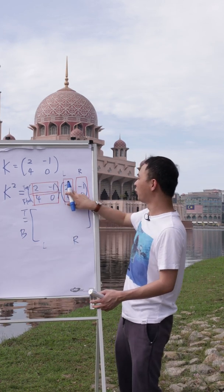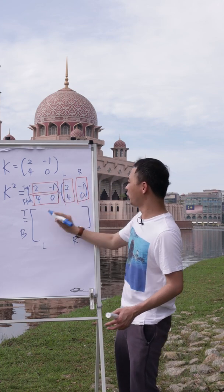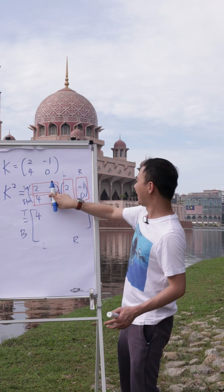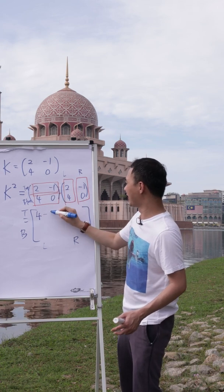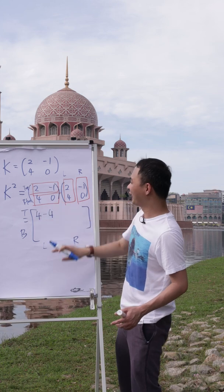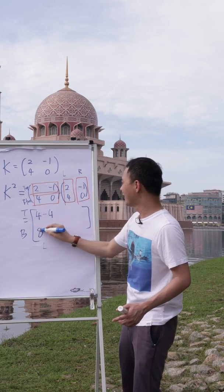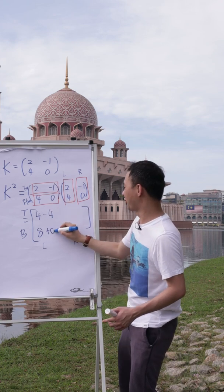Like 2 multiplied with 2 plus negative 1 multiplied with 4. So 2 multiplied by 2, which is 4. Negative 1 multiplied by 4, which is minus 4. Alright, then I've done the top left. Then for the bottom left, I will do 4 multiplied by 2, which is 8, and 0 multiplied by 4, which is 0.